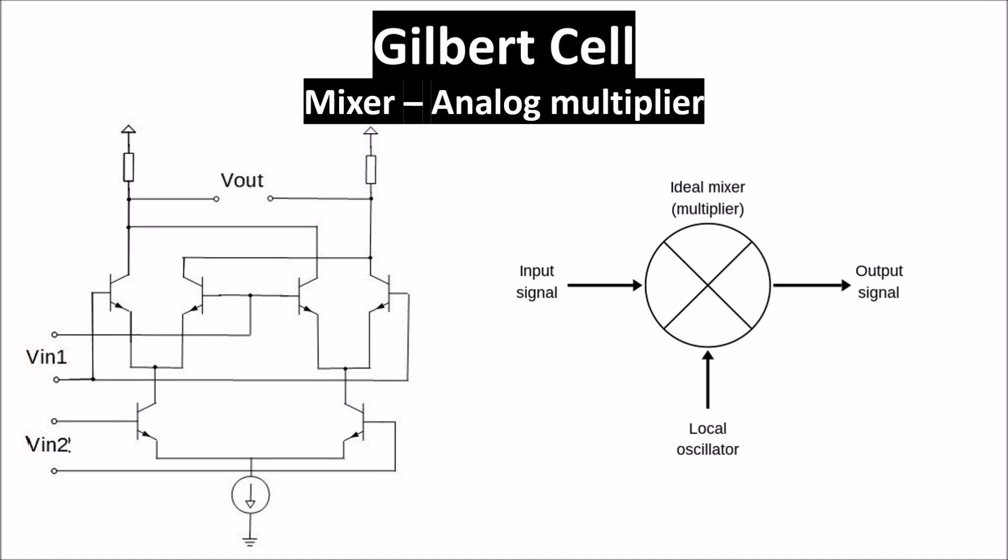This video is about the Gilbert cell, which produces an output signal proportional to the product of two input signals. Such circuits are widely used for frequency conversion in radio systems.